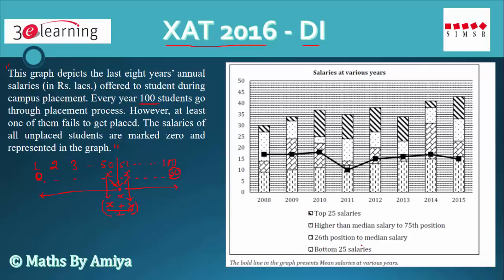What about these four values? We have bottom 25 salaries — positions 1 to 25 — then 26 to median, then median to the 75th position, then 76 to 100. That is, we divide the complete 100-student salary data into four equal parts. We call these quartiles — the median divides into two equal halves, and these four sections are the quartiles.